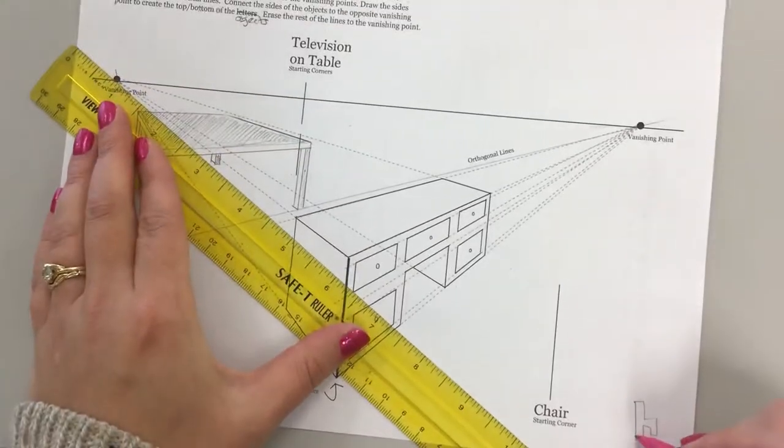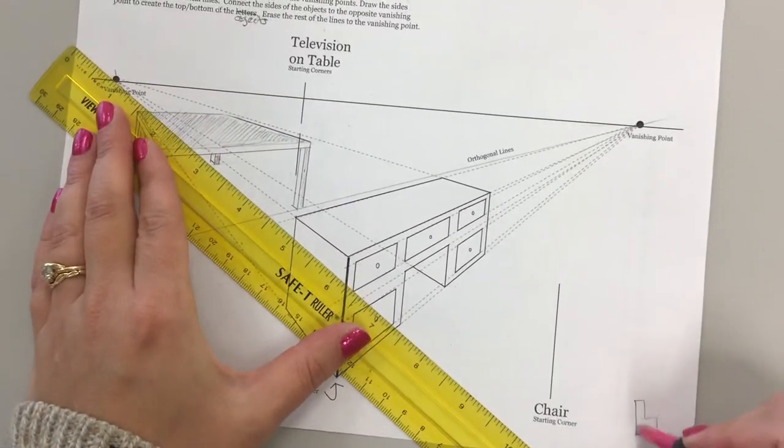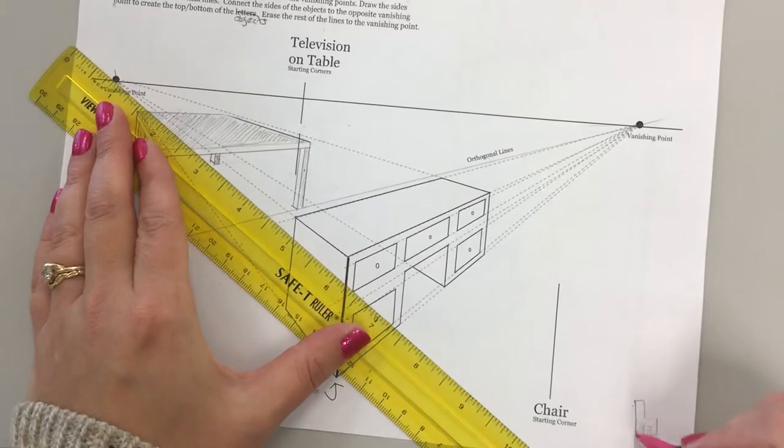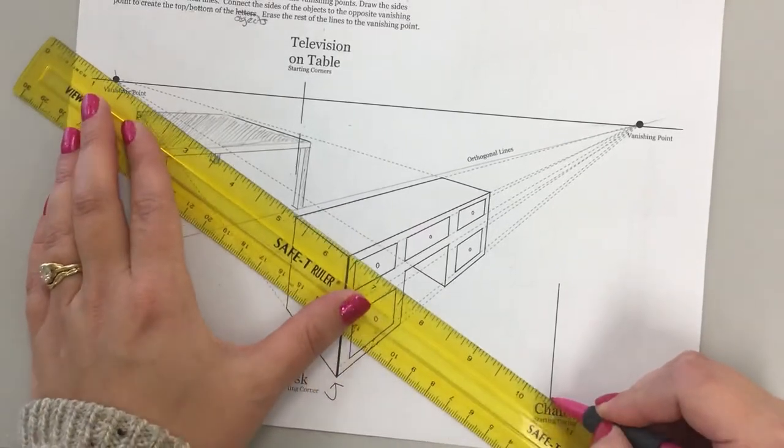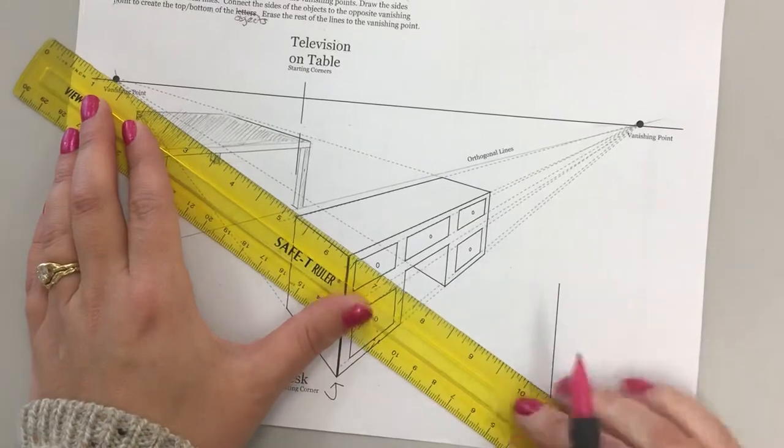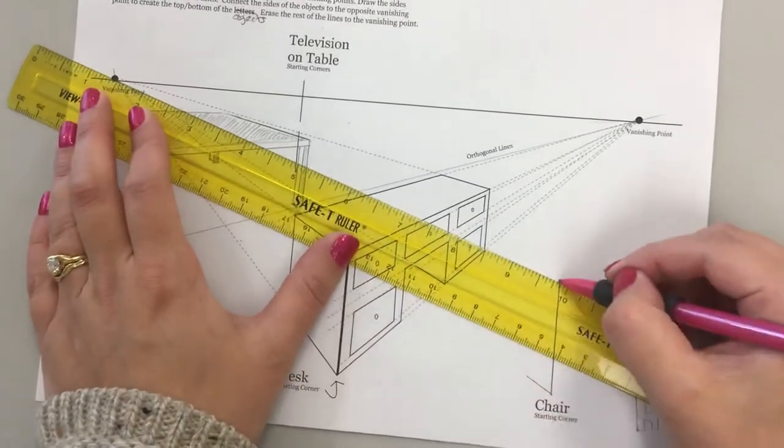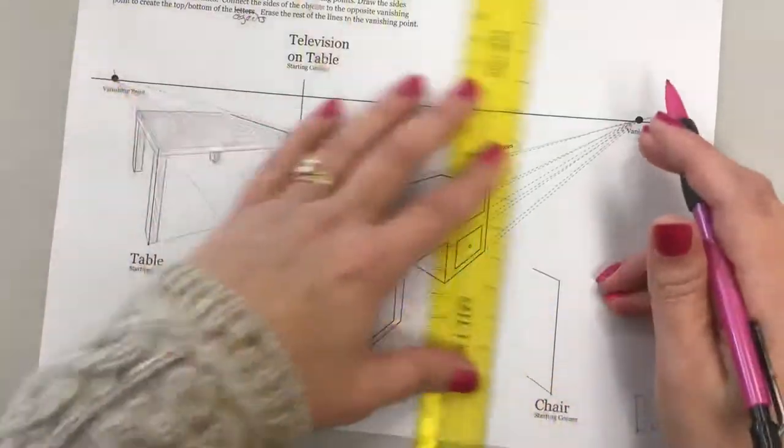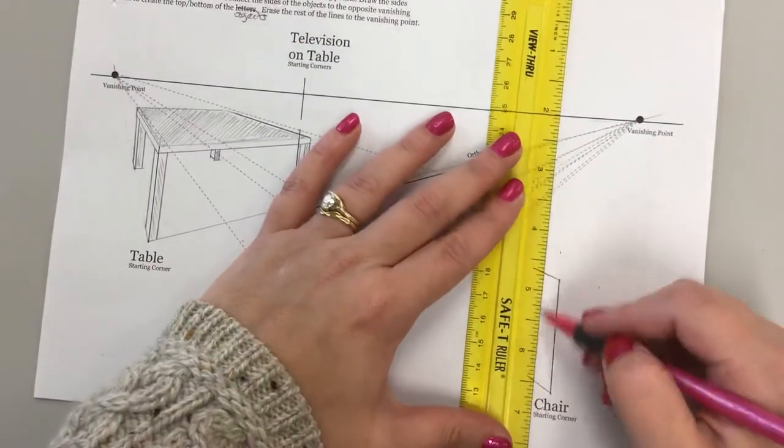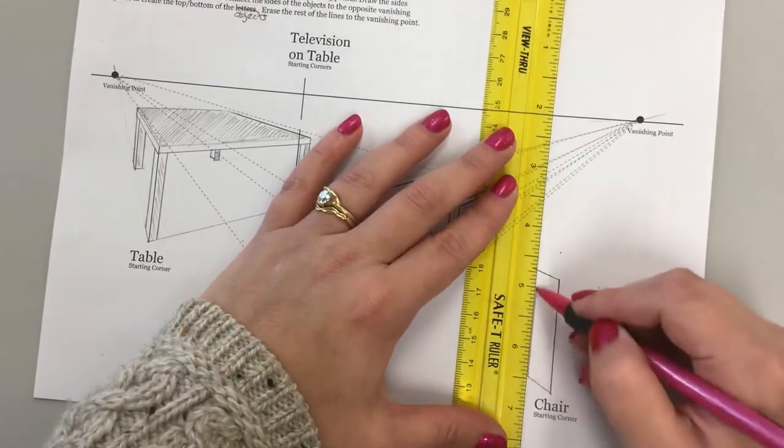So I see that the corner of the chair is right here. I need to know how far back I want the chair to go. I don't want it to go super far back, so I'm going to go here, and then I get a skinny chair.